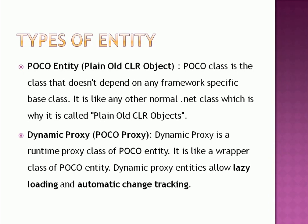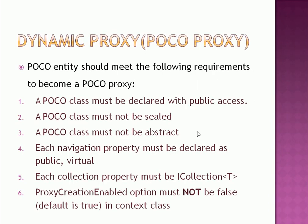To become a POCO proxy, your POCO entity must meet the following requirements: it must be declared with public access, it must not be sealed, it must not be abstract. Each navigation property must be declared public and virtual. Each collection navigation property must be of type ICollection — it cannot be IList, IEnumerable, or List. Also, the ProxyCreationEnabled option must not be false in the Context class; it is true by default, but check to be sure.